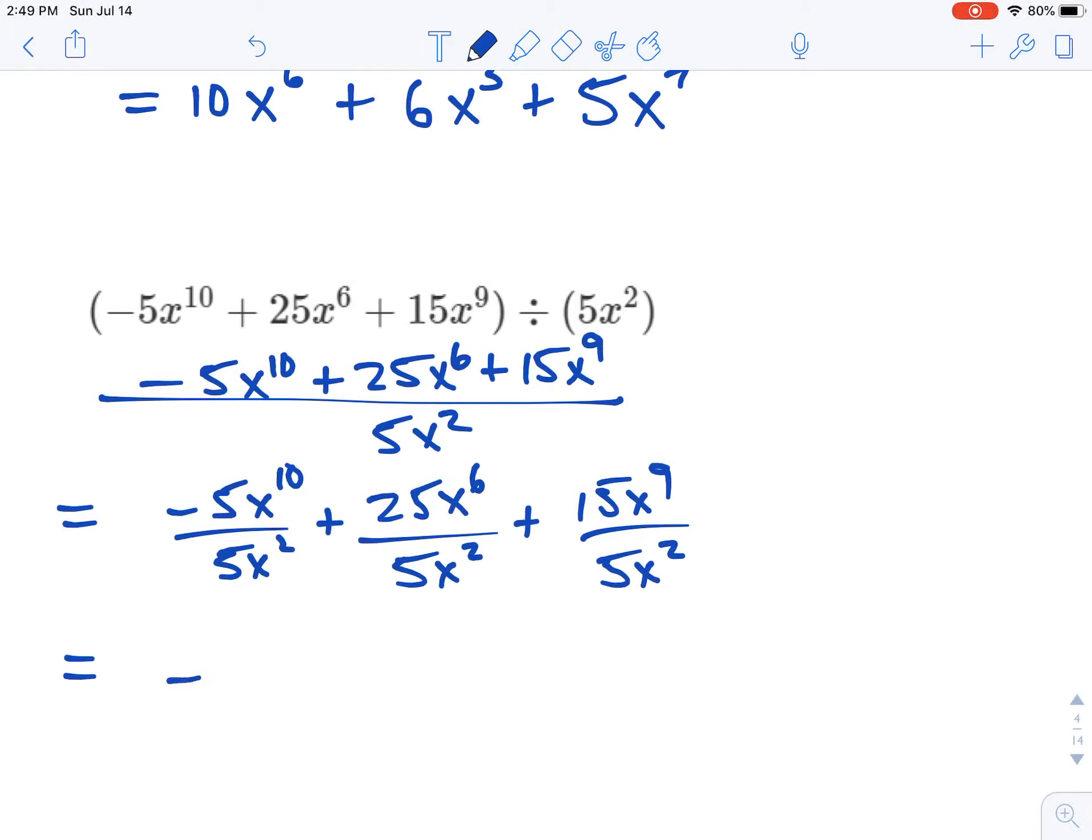So negative 5 divided by 5 is negative 1. x to the 8th, you subtract the exponents there, plus 5x to the 4th. Divide the numbers, subtract the exponents. There we go, plus 3x to the 7th, and we're done. That's all you have to do for dividing polynomial expressions.